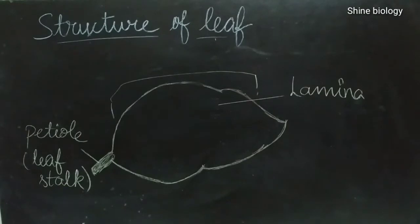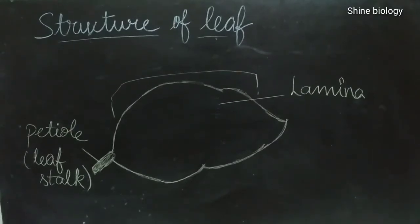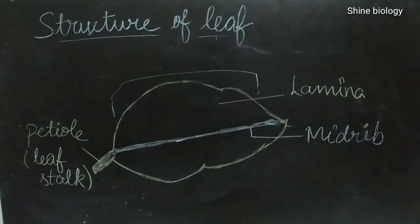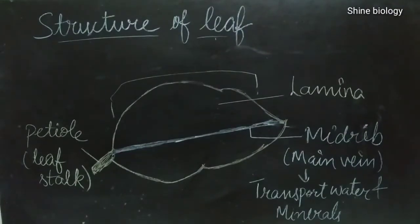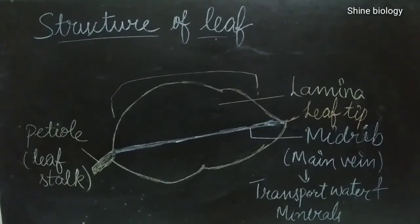Leaves have two main parts: lamina and petiol. In the laminar region of the leaf, there are also different parts which perform various functions. One is the midrib, also known as the main vein. Its main function is the transport of water and minerals in the leaf. The tip of the leaf is called the leaf tip or apex.